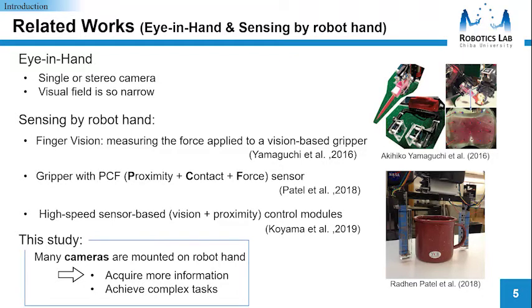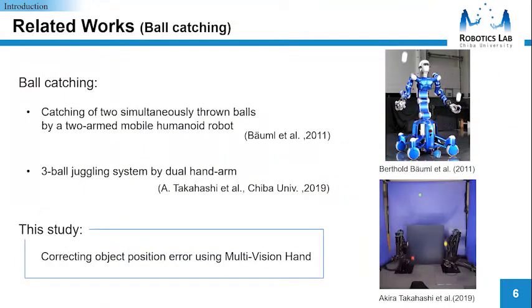In this study, we can acquire a large amount of information by using a number of cameras. And using a multi-fingered robot hand, we can realize more dexterous operations. Examples of ball-catching by robot: Barman et al. demonstrated catching of two simultaneously-thrown balls by a two-armed mobile humanoid robot. Also, in our group, we studied ball-catching as part of ball-juggling control. In this study, we aim for more high-precision operation using a multi-vision hand.